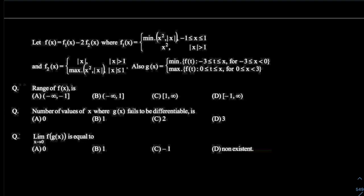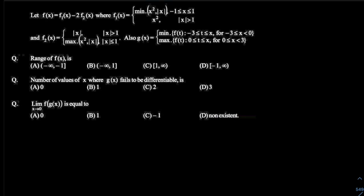So f1(x) talks about the min of x² and |x| when x is between minus one to one, and x² when |x| is greater than one. What do you understand from the min function? It's very simple — f1(x) takes the minimum of the two values, x² and |x|, for a given value of x. For example, if I put x equal to one-half, it will compare whether (1/2)² is more or |1/2| is more. Obviously |1/2| is more, so x², which is (1/2)², will be assigned to f1(x). How do we know this function easily without substituting values?